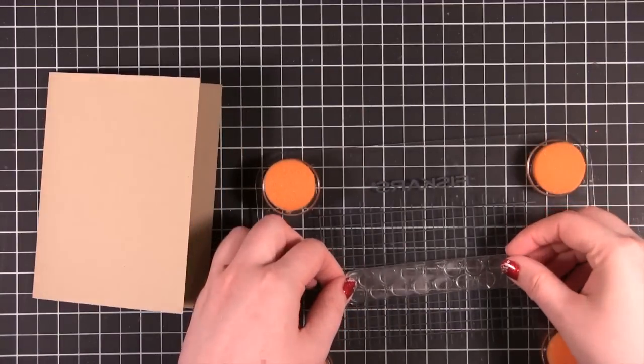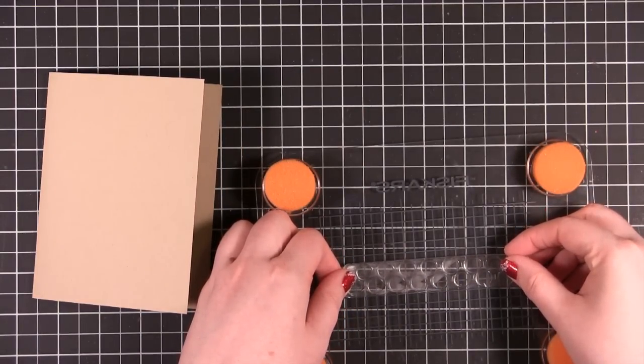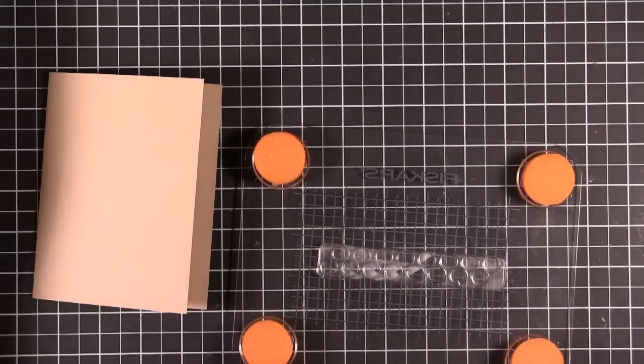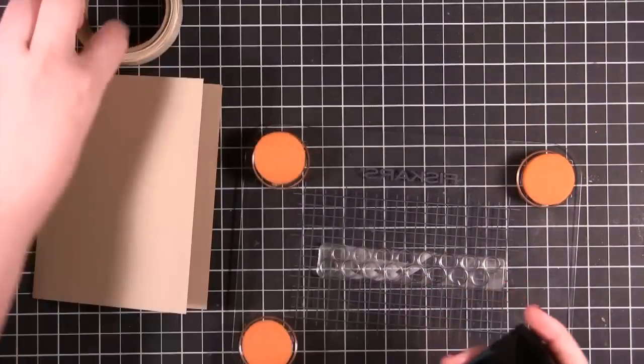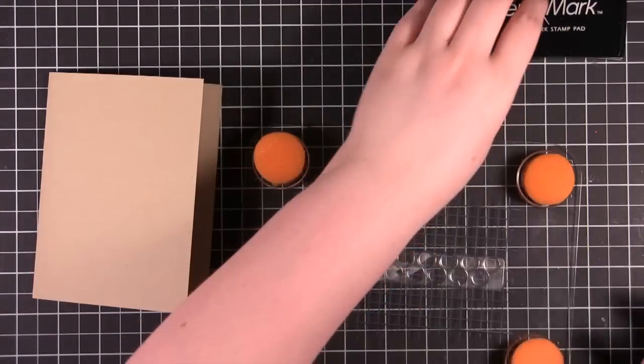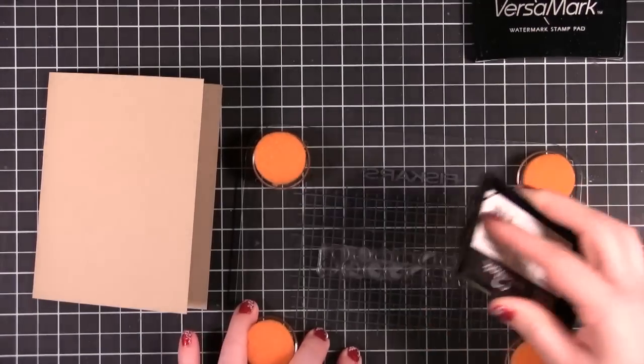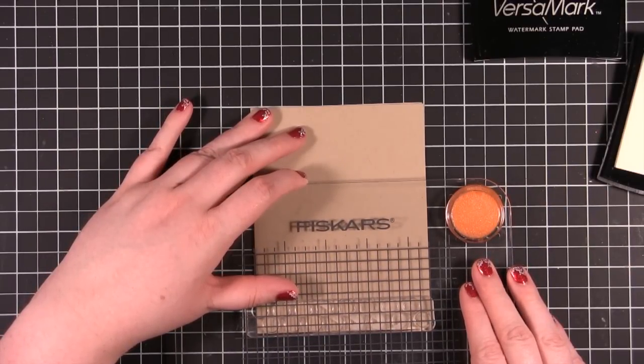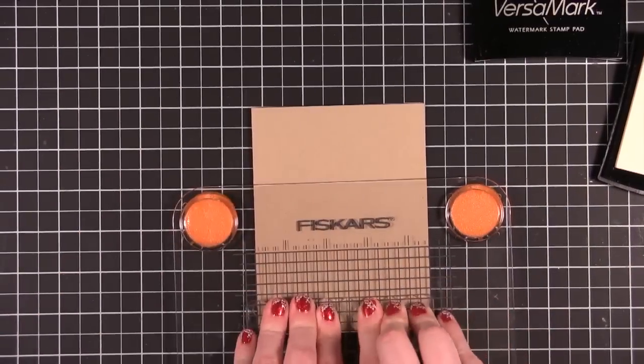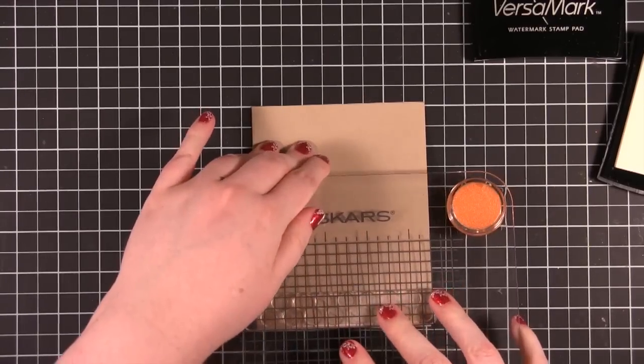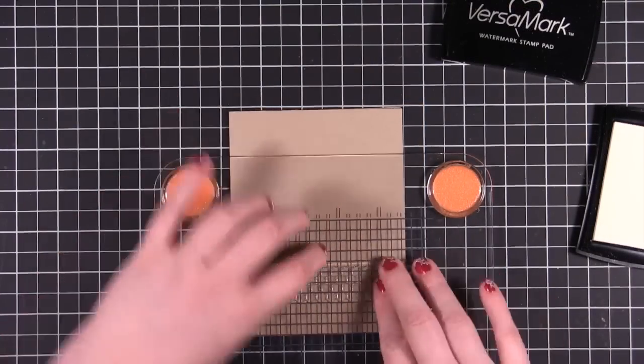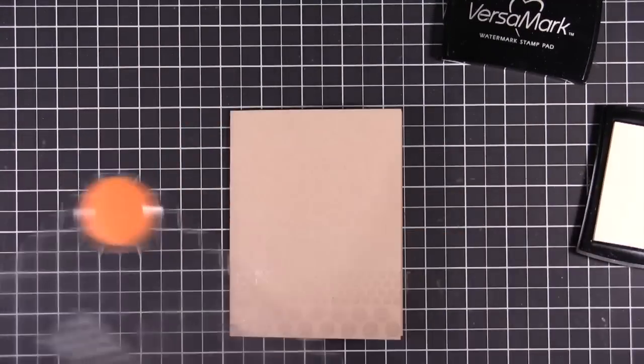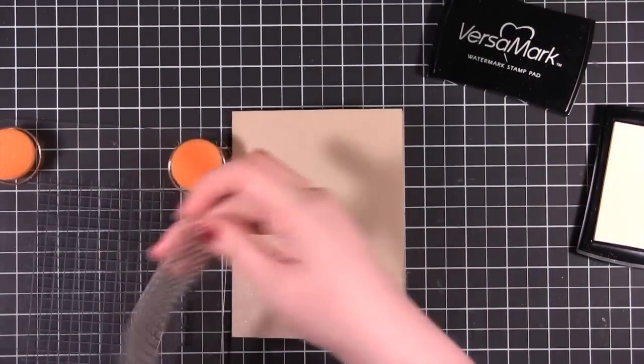I'm just going to mount this on my stamp press, making sure it's lined up with the grid. Then I'm going to use some VersaMark ink. And then one more smaller dot.